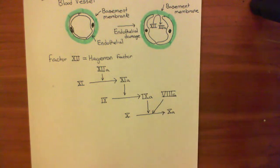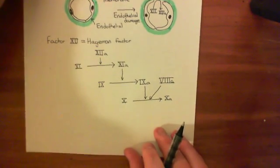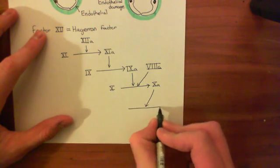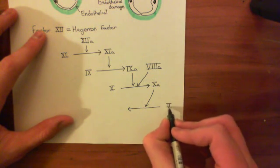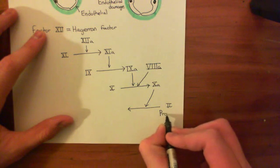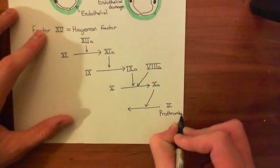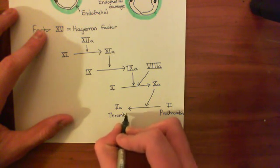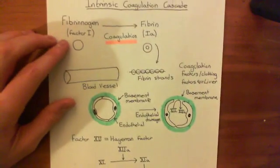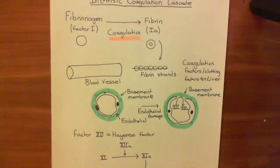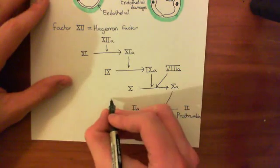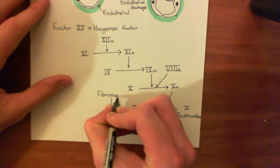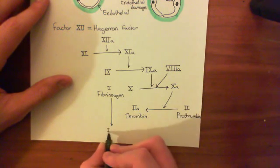Factor 9a and factor 8a together activate factor 10 to factor 10a. Factor 10a then catalyzes the important activation: it activates factor 2, called prothrombin, to factor 2a, called thrombin. Thrombin is the key enzyme — it converts fibrinogen (factor 1, the inactive form) into fibrin monomers (factor 1a).